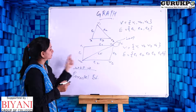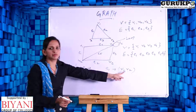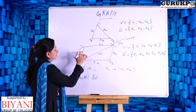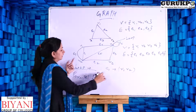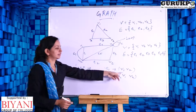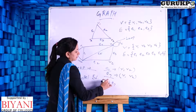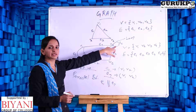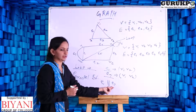Parallel edges: if two edges have the same starting and ending vertex, then those two edges are called parallel edges. For example, if E1 is from V1 to V2, so E1 is equivalent to (V1, V2). If there is another edge E7 also starting and ending at V1 and V2, then E1 and E7 are parallel edges because their starting and ending points are the same.